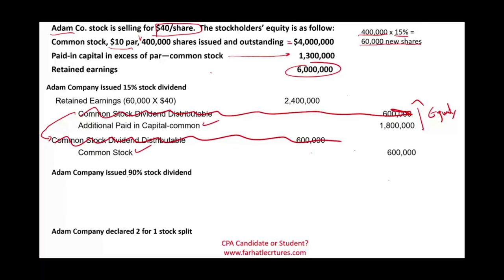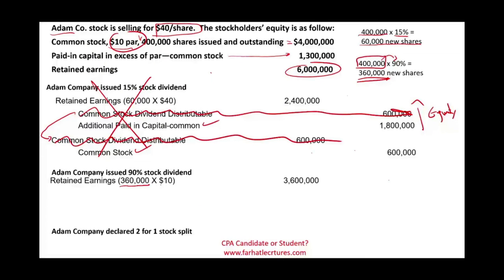Now let's assume the company issued a 90% stock dividend. This is independent from the prior example, so we go back to the original 400,000 shares. At 90%, we will be issuing 360,000 new shares. For a large stock dividend, we debit retained earnings at par value. Therefore, we take 360,000 times $10, which equals $3.6 million — that is the debit to retained earnings.